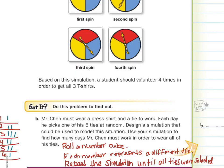So on my experiment, it took one, two, three, four, five, six, seven, eight, nine, ten, eleven days to wear all six ties, at least for my simulation. You may have rolled the number cube six times and come up with something completely different.